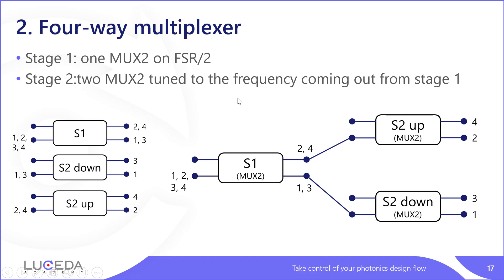The next step is to take this one stage up and design a four-way multiplexer. We have two stages. In the first stage, we use a moocs2 tuned to the desired FSR divided by two. In the second stage, we take the frequencies coming out of stage one and split them further. The goal of stage one is to split the odd and even frequencies into two different channels, and stage two takes these incoming frequencies and splits them further. The final outcome is four input wavelengths split into four different channels.